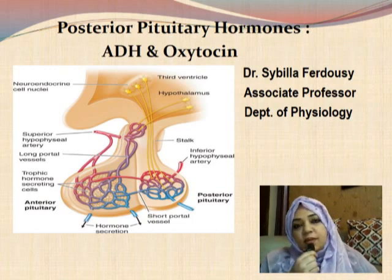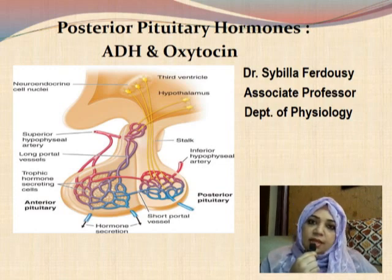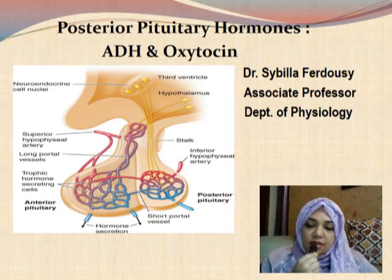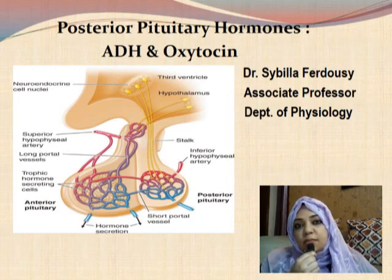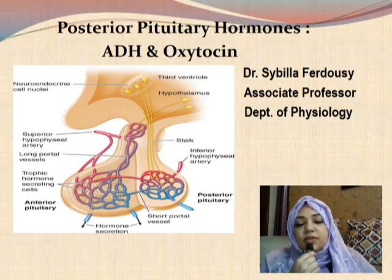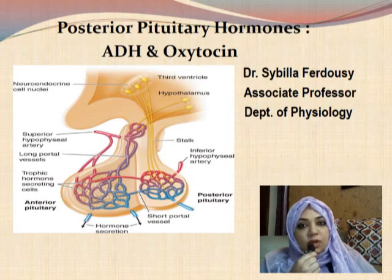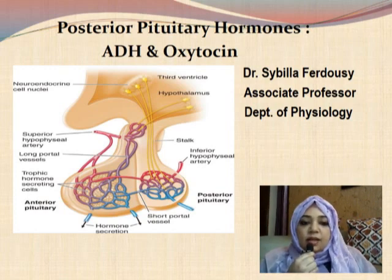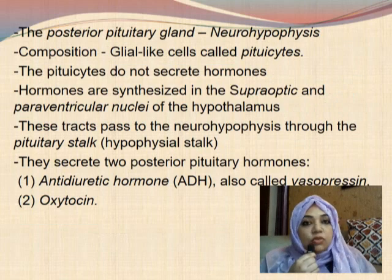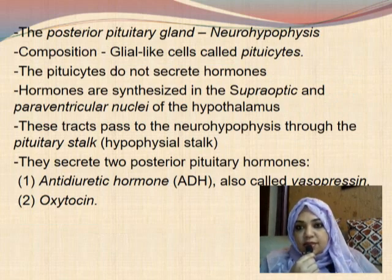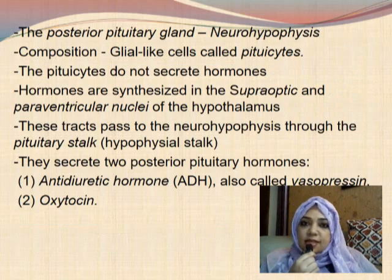Assalamualaikum and welcome to your online sessions. Before the Eid vacations we discussed about the hormones of the anterior pituitary gland, and in this lecture we are going to discuss about the posterior pituitary hormones. The posterior pituitary gland secretes two hormones: one is the anti-diuretic hormone and another one is oxytocin. The posterior pituitary gland is also known as the neurohypophysis and it is composed of glial-like cells called pituicytes.